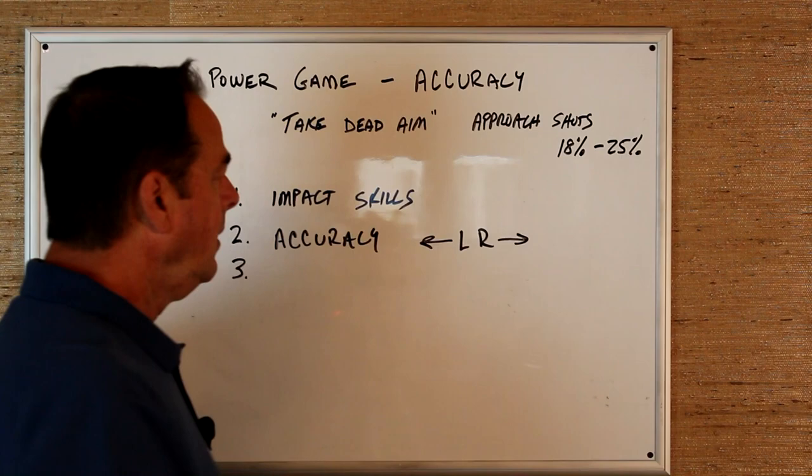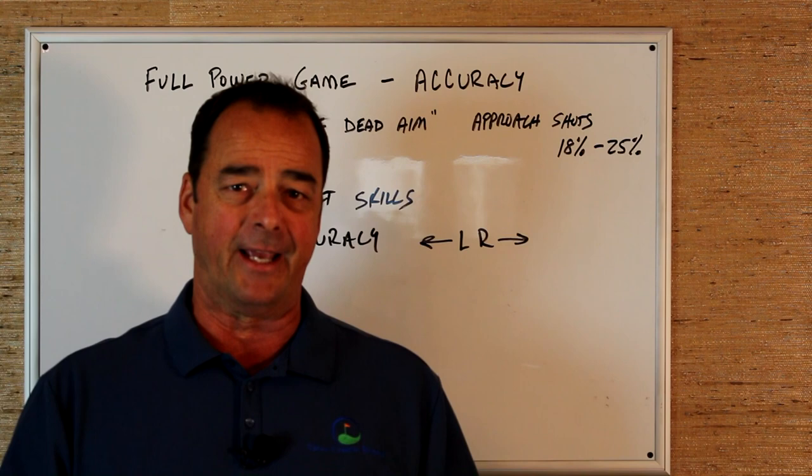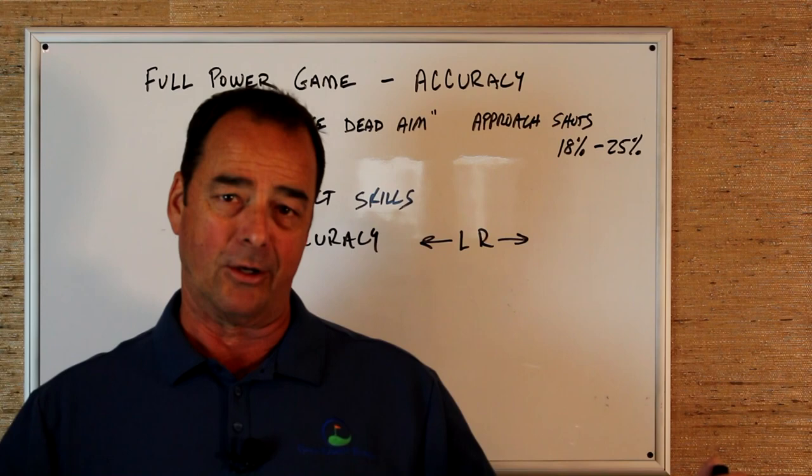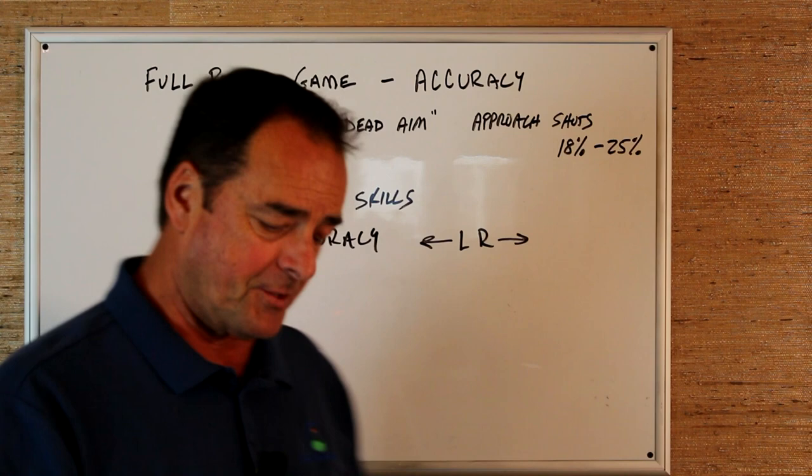So as you're taking dead aim on the center of the green, how close do you get to your shot? Is it way left? Is it way right? And we're going to create a dispersion pattern and then our goal is to always tighten that up and be as accurate as possible.